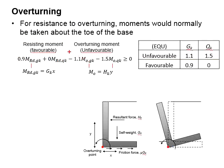As for the overturning moment, 1.1 is to be multiplied for the GK and 1.5 is for the QK.